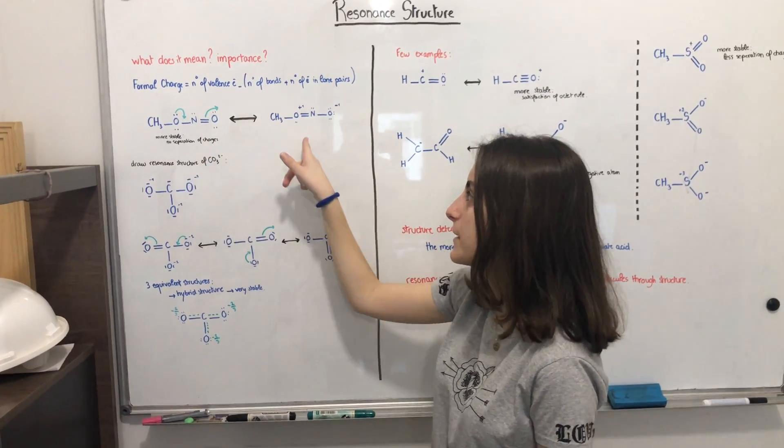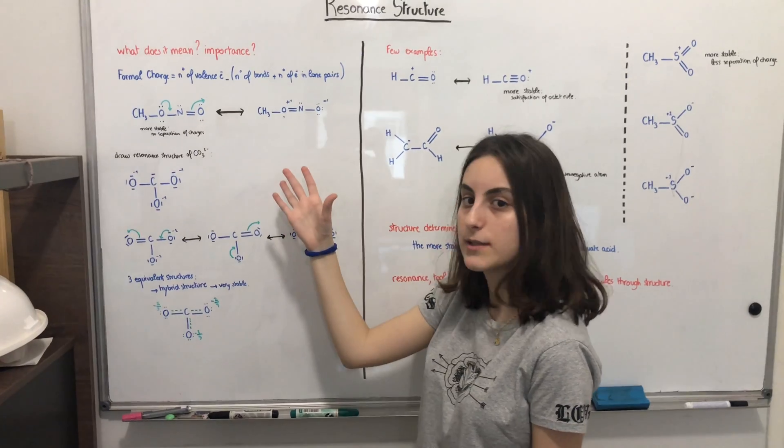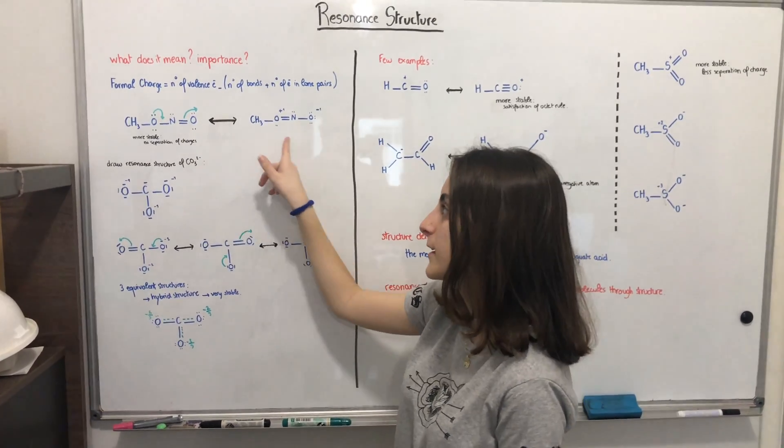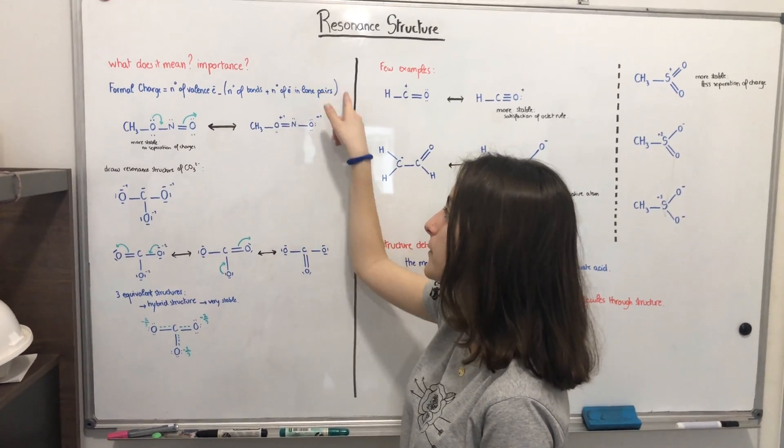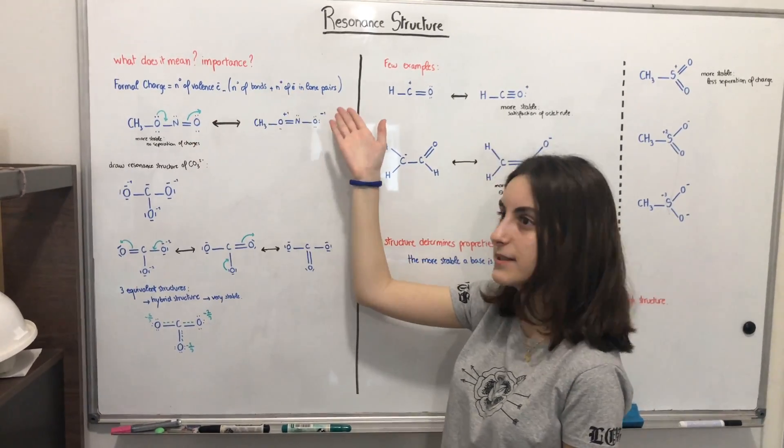Now, this one is more stable than this one, this resonance structure, because there is no separation of charges. The charges can be determined through this formula. Formal charge equals, you can see here.